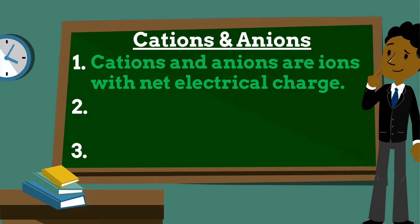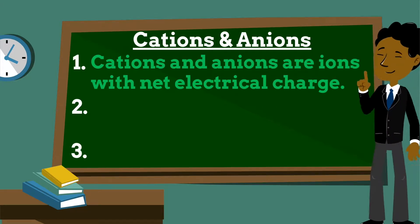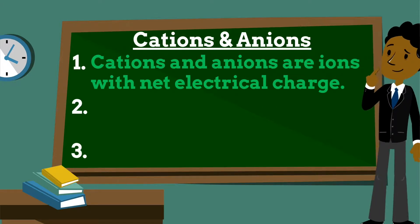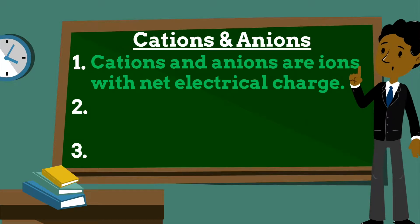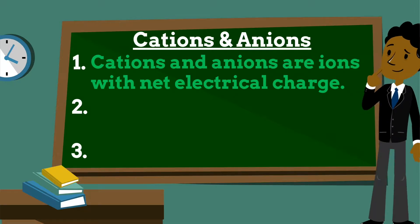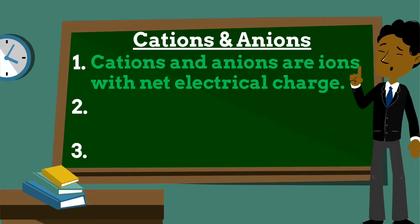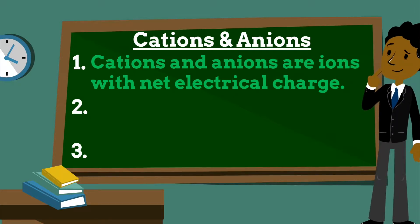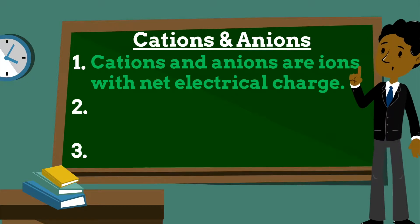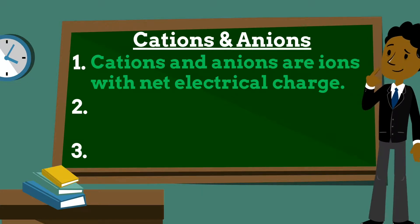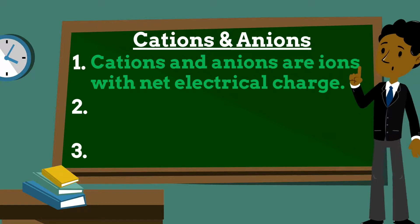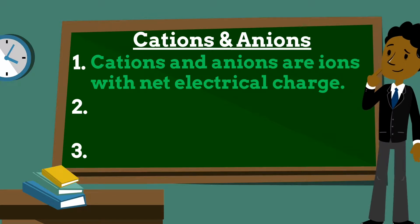Cations and anions are both ions. The difference between a cation and an anion is the net electrical charge of the ion. Ions are atoms or molecules which have gained or lost one or more valence electrons, giving the ion a net positive or negative charge.